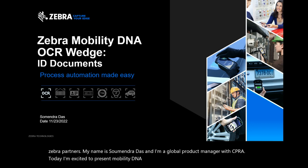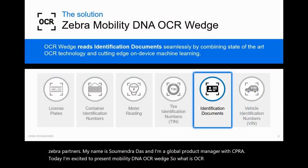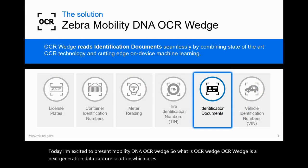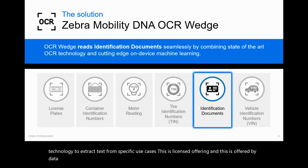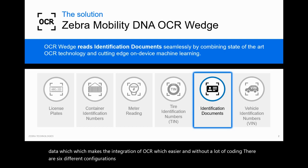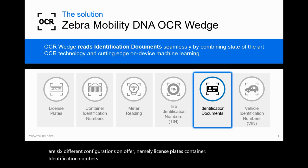So what is OCR Wedge? OCR Wedge is a next-generation data capture solution which uses on-device machine learning and OCR technology to extract text from specific use cases. This is a licensed offering powered by DataWedge, which makes the integration of OCR Wedge easier and without a lot of coding. There are six different configurations on offer: license plates, container identification numbers, meter reading, tire identification number, identification documents, and vehicle identification number.